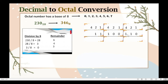So in the first group, 4 has 1 under it and 2 has 1 under it, so we are going to add 4 plus 2 and the sum is 6. Then in the next group, we only have 4 which has 1 under it, so we have 4. And in the third group, we have 2 which has 1 under it and 1 which has 1 under it. Since there is no binary digit for the remaining position, this is tantamount to having 0 there. So 2 plus 1 is equivalent to 3. So this is now our converted octal given this decimal number.